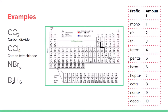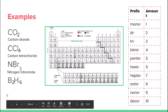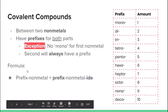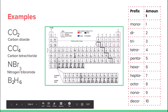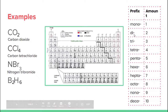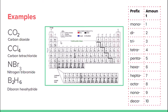For nitrogen and bromine: there's only one nitrogen, so we don't say mononitrogen — it's just nitrogen. There are three bromines, so it's tribromide. That gives us nitrogen tribromide. Now for a case where there's more than one of the first element — like two borons — we definitely do need a prefix: diboron. With six hydrogens, it's hexahydride. So the compound is diboron hexahydride. And that's really all there is to naming these compounds.